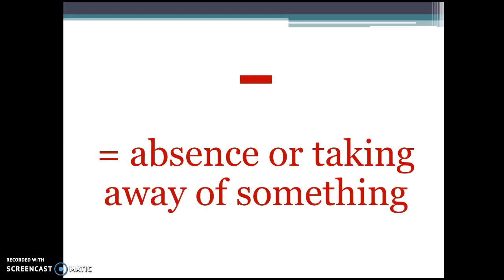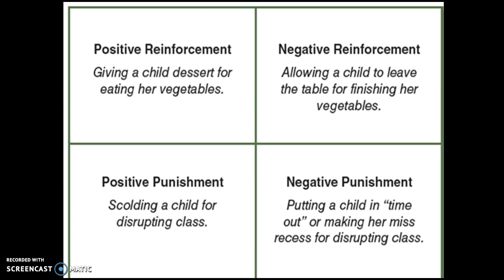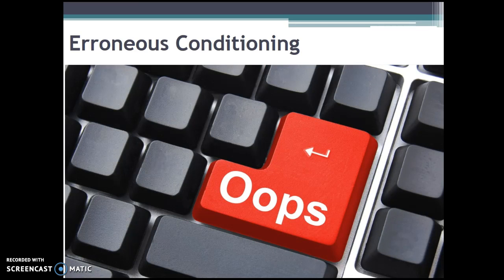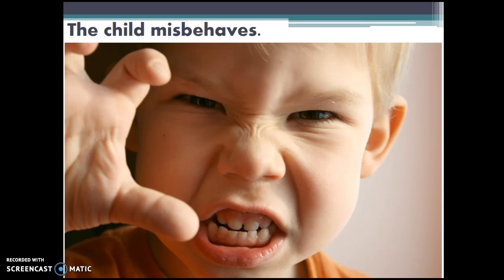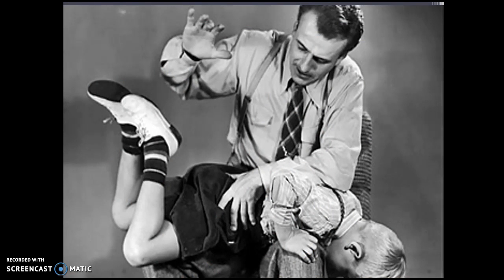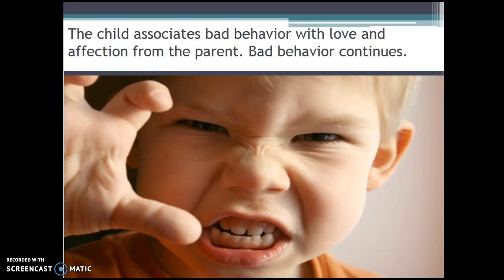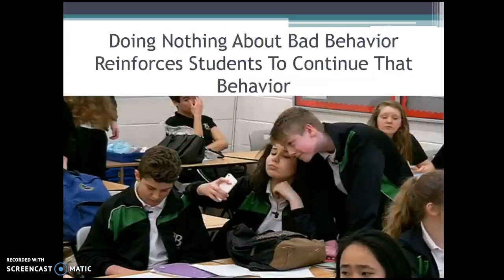The negative means the absence of something and can be used with a reward or a punishment. For instance, you could take a chore like doing the dishes away from the child as a reward, or take away free time with friends as a punishment. Some parents mistakenly reinforce the wrong behaviors and the children don't realize that they are being conditioned to do the wrong things. For instance, the child misbehaves, the parent spanks the child as a form of positive or applied punishment, the child cries and this makes the parent feel bad, the parent comforts the child with a hug and tells the child that he loves him. The child then subconsciously associates the bad behavior with the love of his parent, which implicitly encourages the child to misbehave. In the classroom, the absence of any punishments for bad behavior is actually reinforcing the students to misbehave.